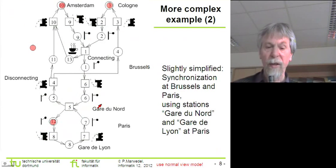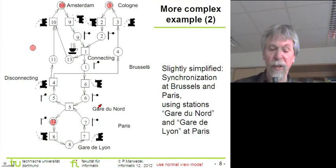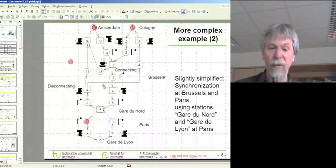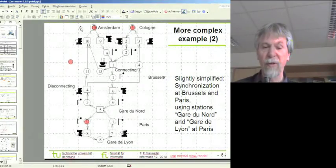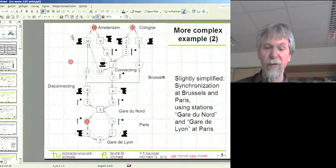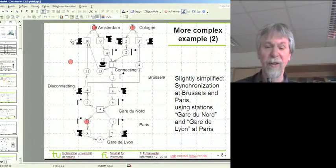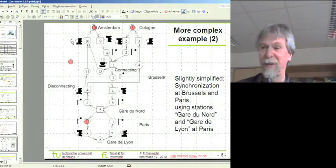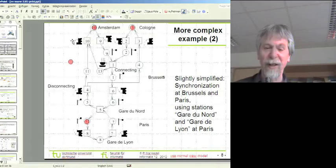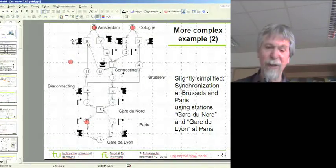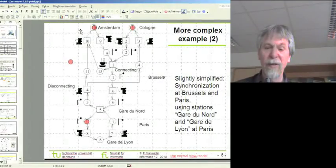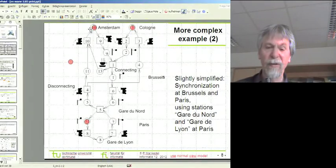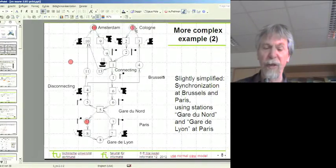Now this is a situation that we can also model with a Petri Net. This is the Petri Net model of our trains. Of course these steam engines are no longer in use on that segment of the track. Actually it's a high speed track, but the steam engines are of course a little easier to visualize. So in this case we are starting with a situation where we have a train in Amsterdam and a train at Cologne.